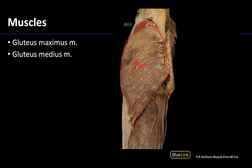The gluteus medius muscle attaches a bit more superiorly than the gluteus maximus. You can also see inferiorly this very white opaque region, which is the gluteus maximus major distal attachment — the IT band or iliotibial tract.